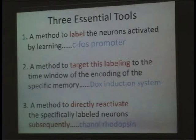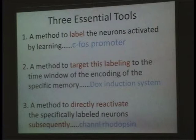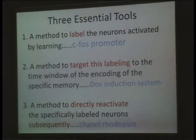The first tool is a method to label the neurons activated by encoding or learning. For this, we use the immediate early gene c-fos promoter in a transgenic system. The second tool is a method to target this labeling to the time window of encoding of that specific experience and memory. For this, we use the so-called tetracycline induction, or doxycycline induction, system.